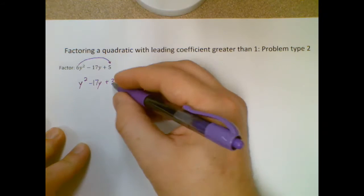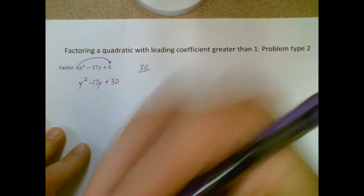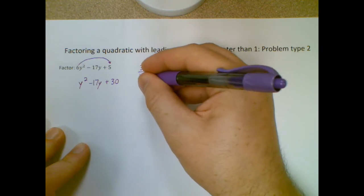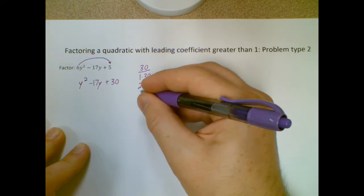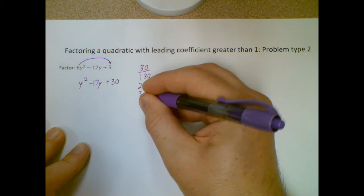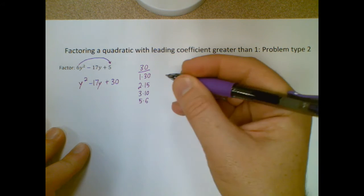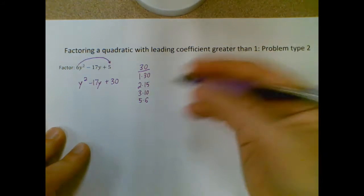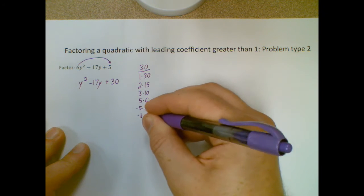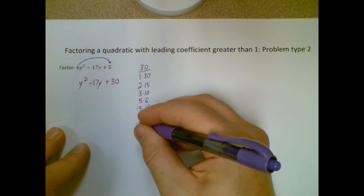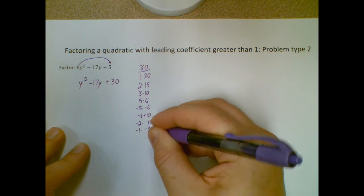Now I can factor it like normal and try to figure out what multiplies to 30 and adds up to negative 17. I find my factor pairs of 30, which is 1 times 30, 2 times 15, 3 times 10, 5 times 6. I don't need to reverse them all, but I do need my negatives, so add negatives to all of those numbers.